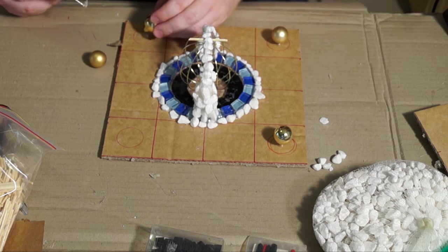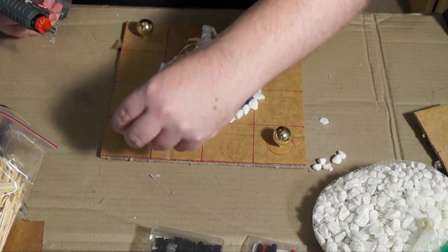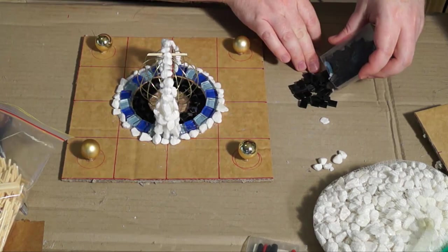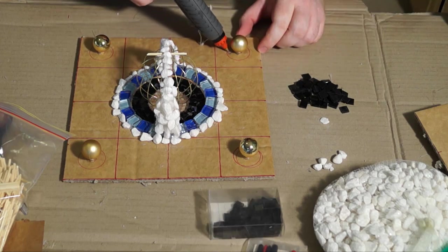Here I'm just placing hot glue and putting the Christmas baubles down. I chose gold ones because they will look like part of a machine. You could use silver as well. I don't really want to use any colored ones.